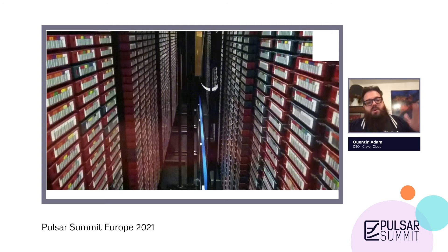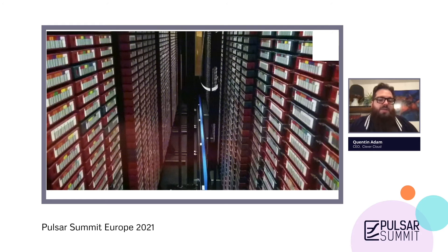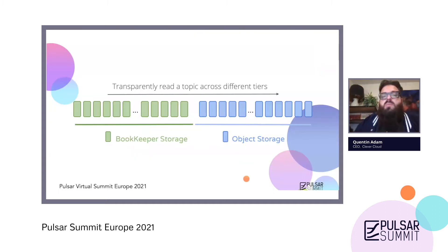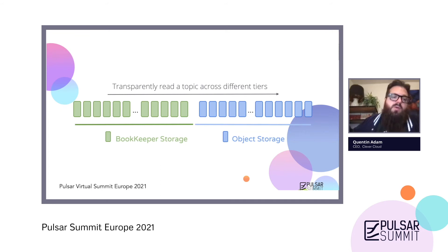That's why we decided that the primary storage system for all logs inside CleverCloud will be Pulsar, because all the logs are tied to the object storage system. It allows all of our customers to decide what retention period they want for every kind of logs — a nice touch for many customers. The infinite storage capability, with tiering and the ability to transparently read a topic across different storage systems, is very important for us. As a developer, there is no difference in the API between BookKeeper and the object storage.